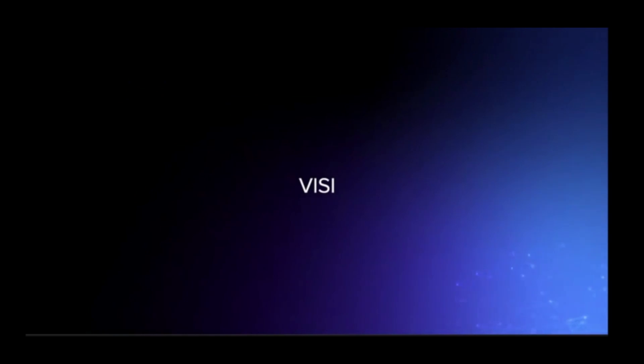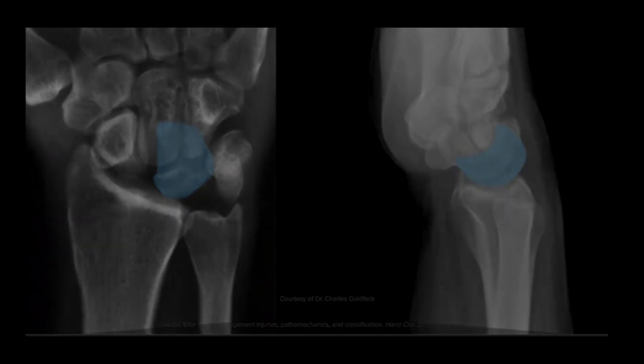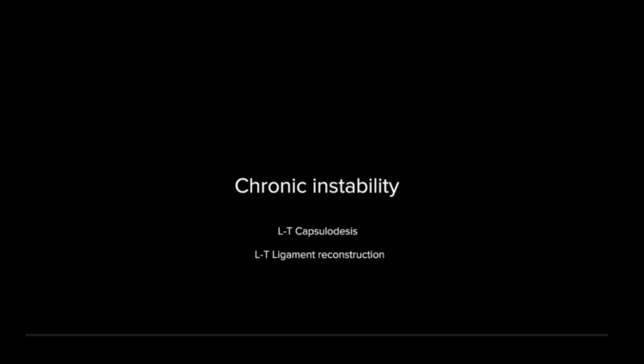Chronic lunotriquetral ligament instability, secondary to untreated full tears, can cause a static VISI instability pattern. VISI stands for volar intercalated segment instability, where the intercalated segment is the first carpal row. The lunate tilts into flexion and a gap between the lunate and triquetrum is commonly seen. In chronic cases with static instability, it is not possible to perform a primary repair. The treatment options are LT capsulodesis, LT ligament reconstruction, and LT fusion.